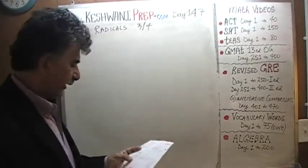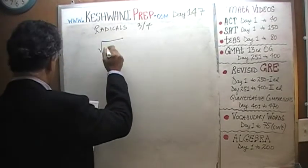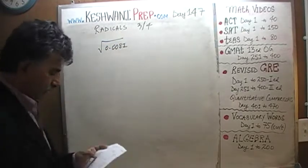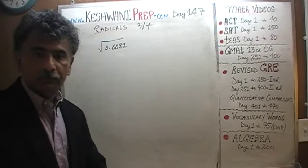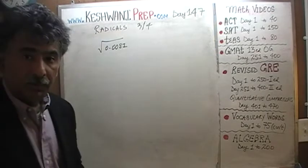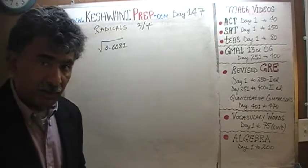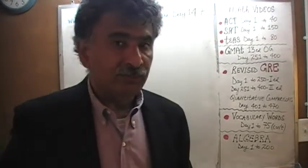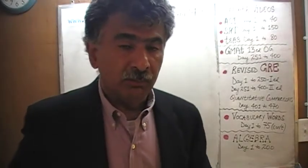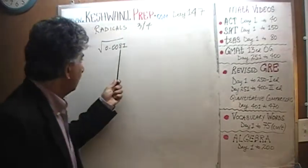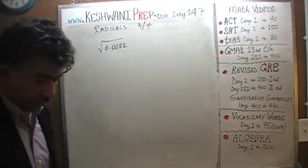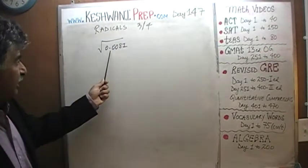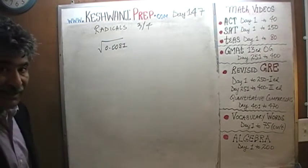The very first problem we have is the square root of 0.0081. Our job is somehow to get 0.0081 and transform it into a whole number as quickly as possible, because we know square root of 81 — we can figure that out very easily. Square root of 81 is 9. The question is: how do we convert 0.0081 into 81?